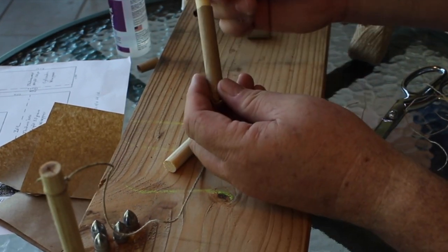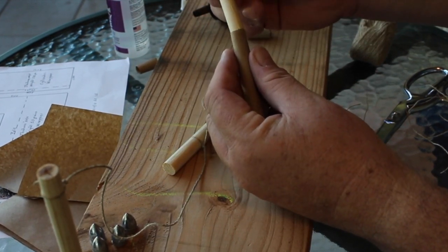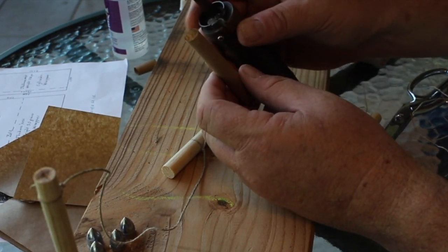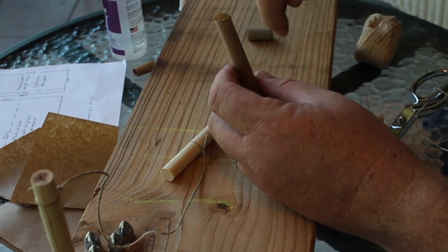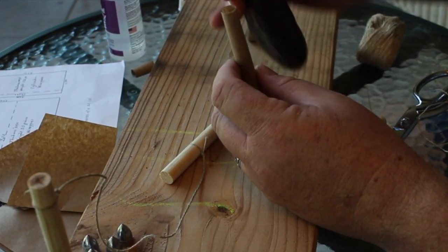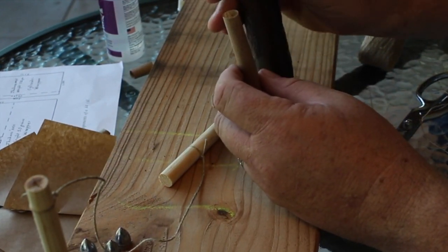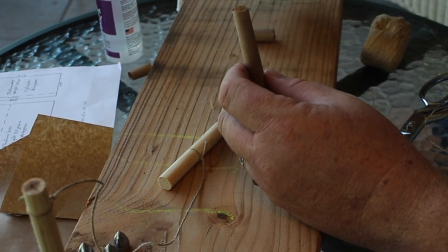My powder flask has a 15 grain charger. I'll give it two charges for a total of 30 grains. You can weigh them, and I do weigh some cartridges. I think in this situation, this is pretty close. 30 grains.